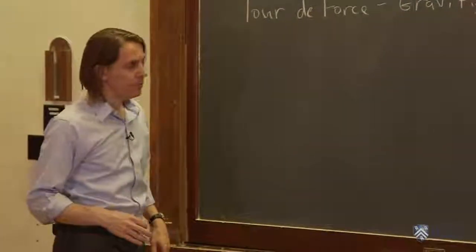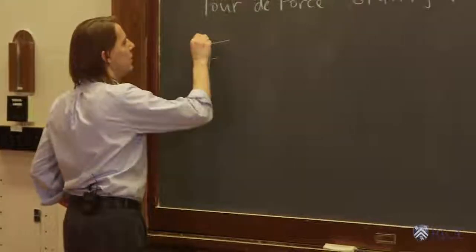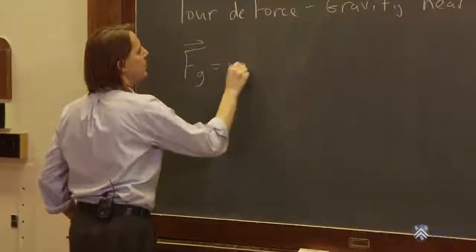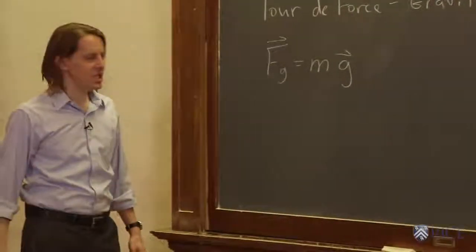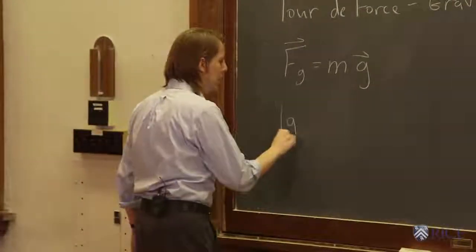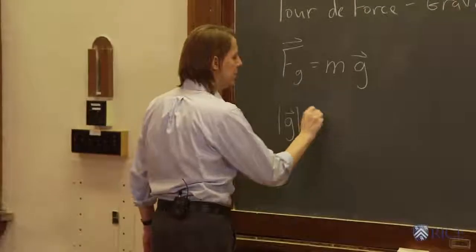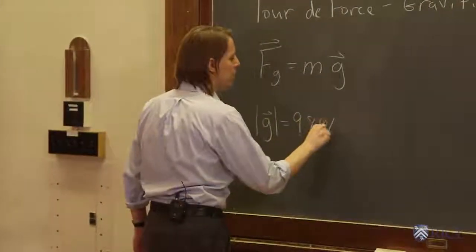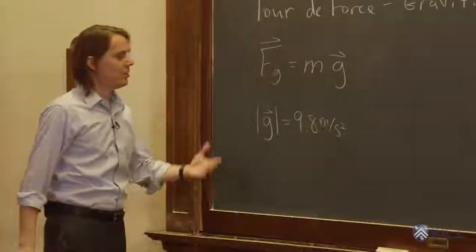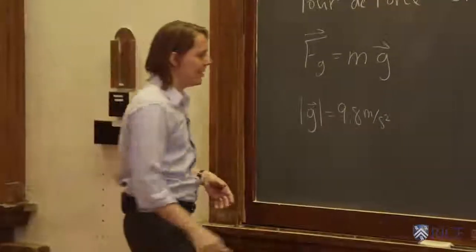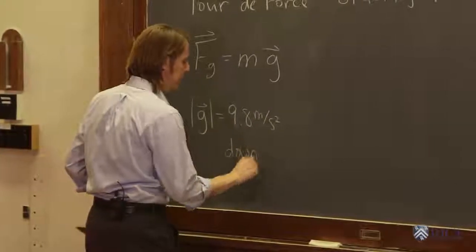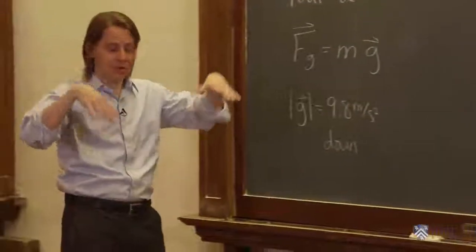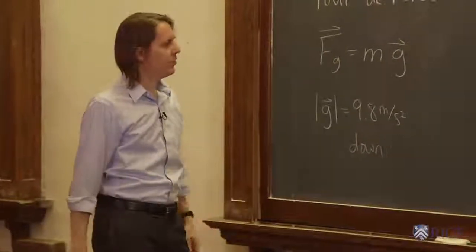So to calculate the gravitational force, it's FG is the mass times the vector constant G. So the magnitude of little g is 9.8 meters per second squared. It is basically the acceleration that we observed when we were doing kinematics, and its direction is down, because down generally for us means towards the surface of the Earth.